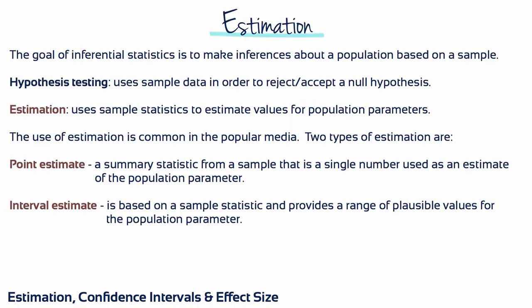Hypothesis testing seeks to learn more about the value of a parameter in a population of interest by deciding whether to retain or reject a null hypothesis. We can also learn this information by using an alternative technique called estimation. Estimation does not require that we state a null hypothesis and decide whether it should be rejected. We use estimation to measure the mean in a sample, but instead of making a decision regarding a null hypothesis, we estimate the limits within which the population mean is likely to be contained. There are two types of estimation: the point estimate is a single number used to estimate the population parameter, whereas the interval estimate provides a range of plausible values.